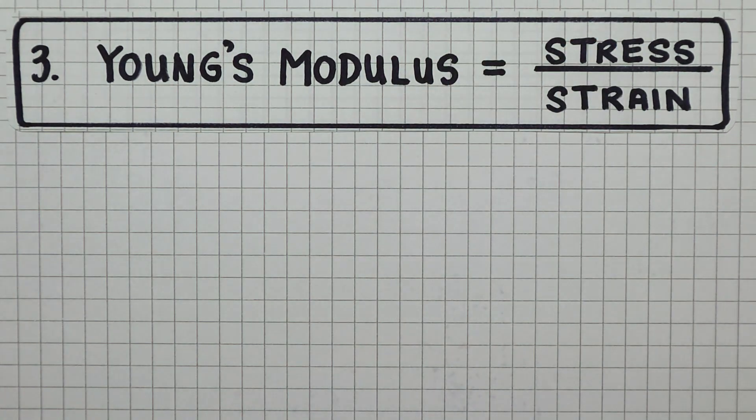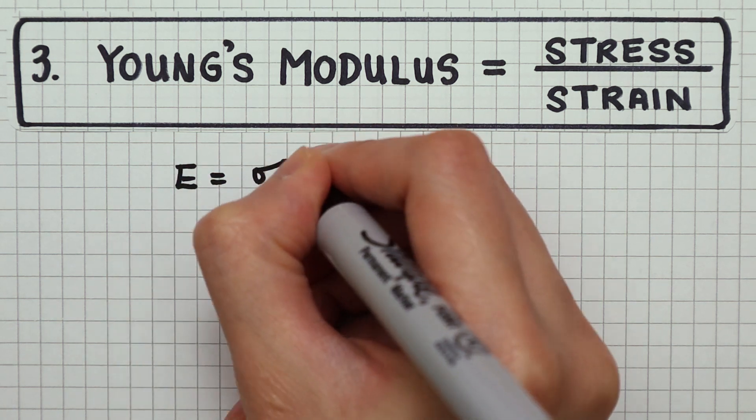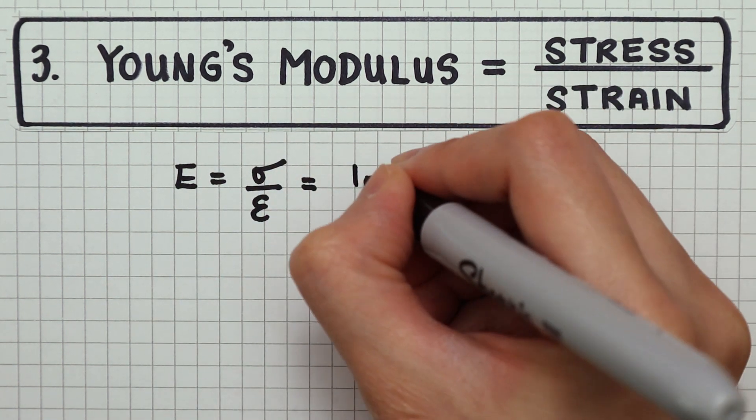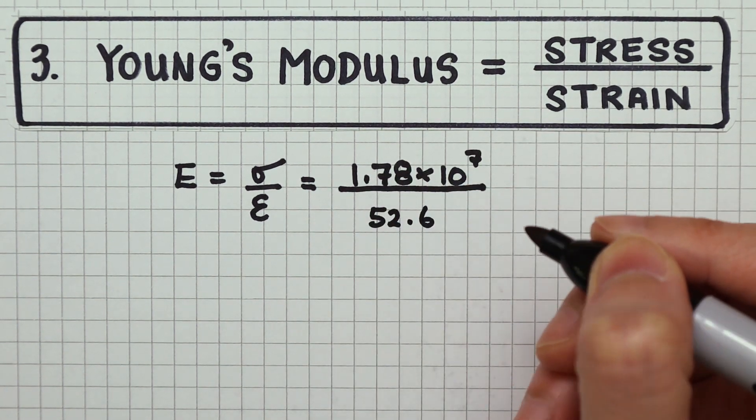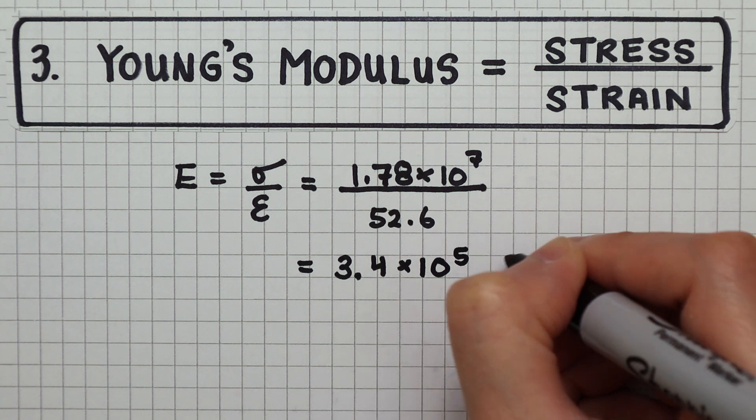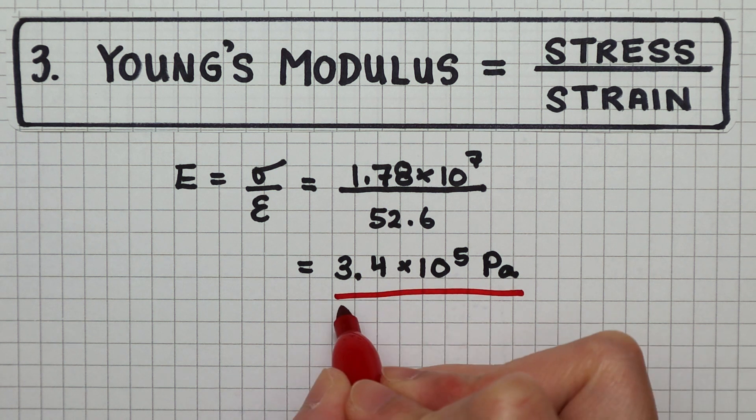Now that we know the stress and the strain, we can plug these numbers into the Young's modulus equation. Young's modulus is stress over strain. So the Young's modulus of Elastigirl's arm works out to be 3.39 times 10 to the power of 5 pascals. So the order of magnitude is 10 to the power of 5 pascals.